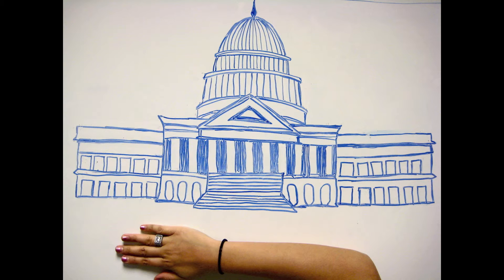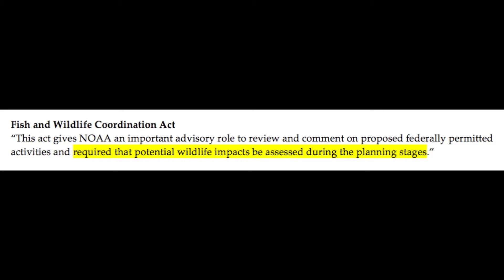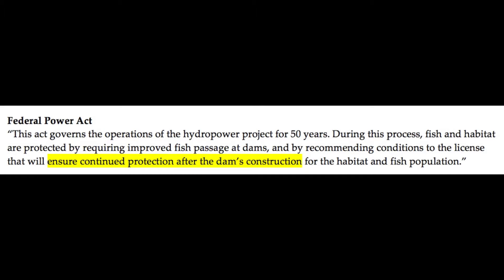In 1934, these problems were brought to Congress. The Fish and Wildlife Coordination Act required that potential wildlife impacts be assessed during federal dam planning. NOAA's Federal Power Act ensures continuing protection after the dam's construction.